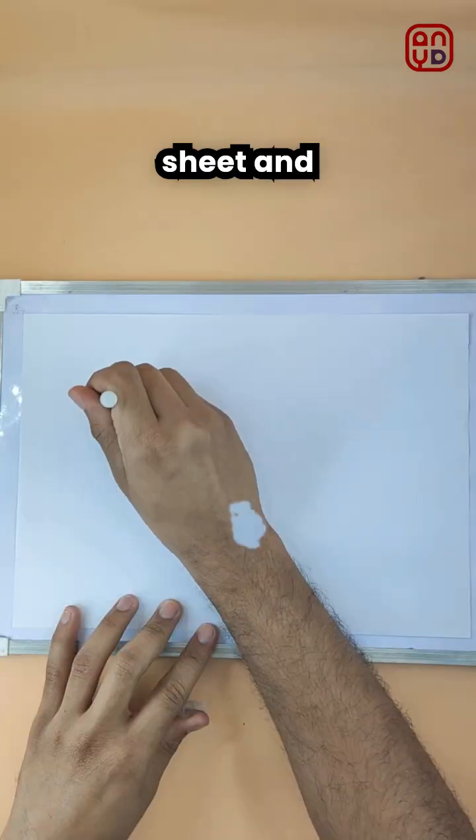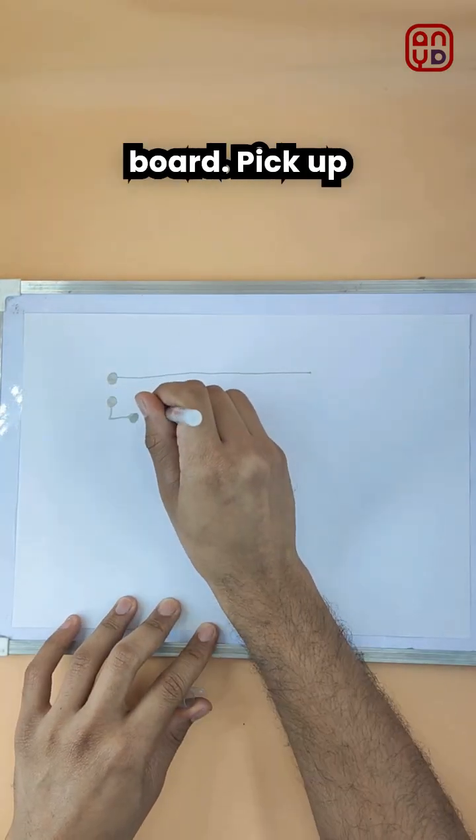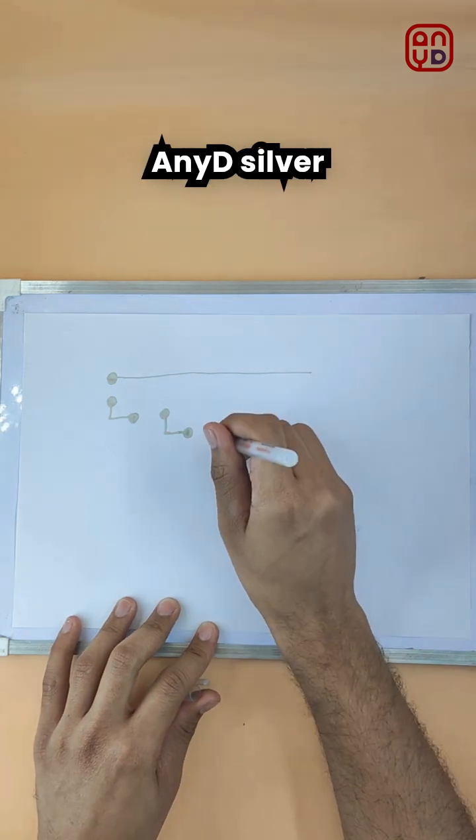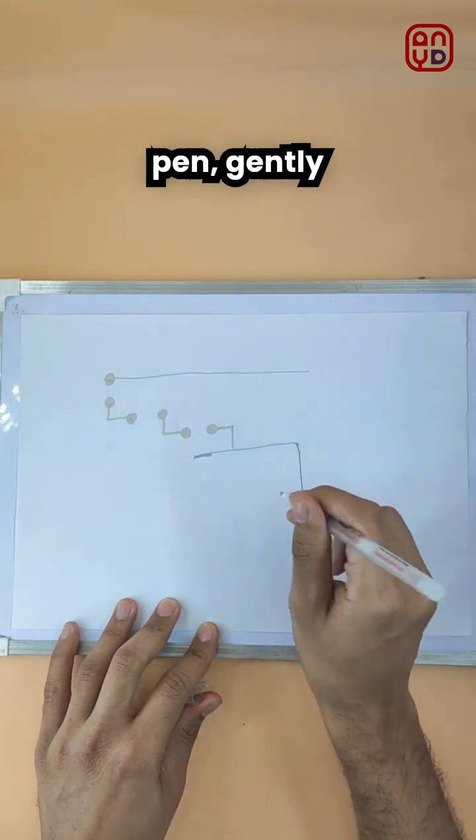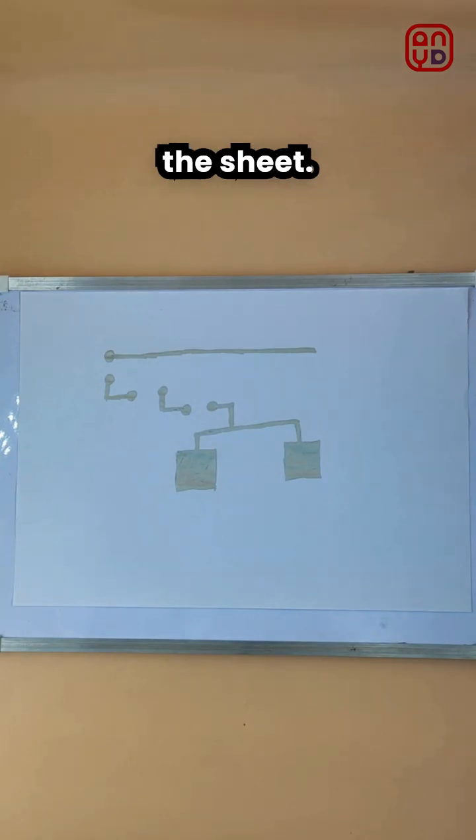Take an A4 sheet and carefully place it onto a magnetic board. Pick up a NED silver conductive ink pen, gently shake it and draw the circuit onto the sheet.